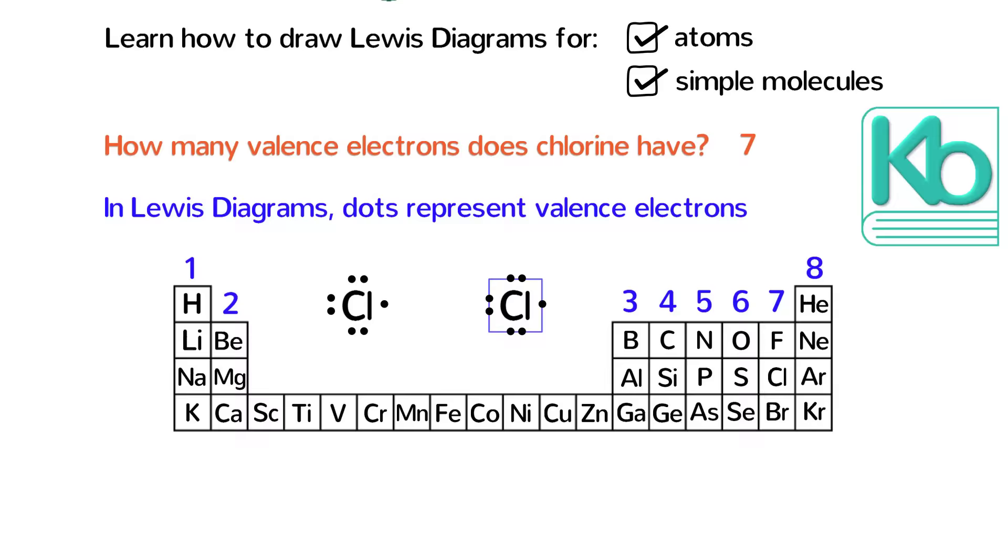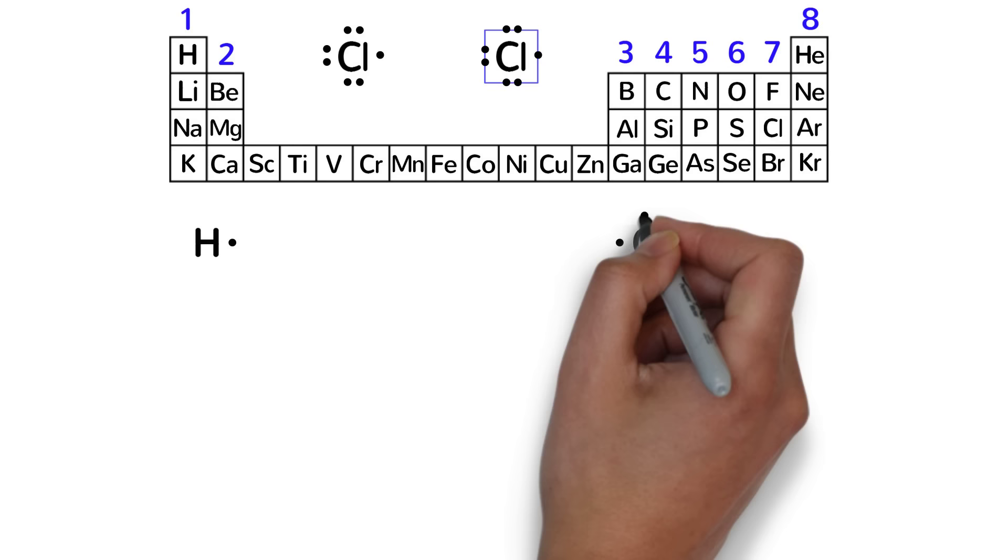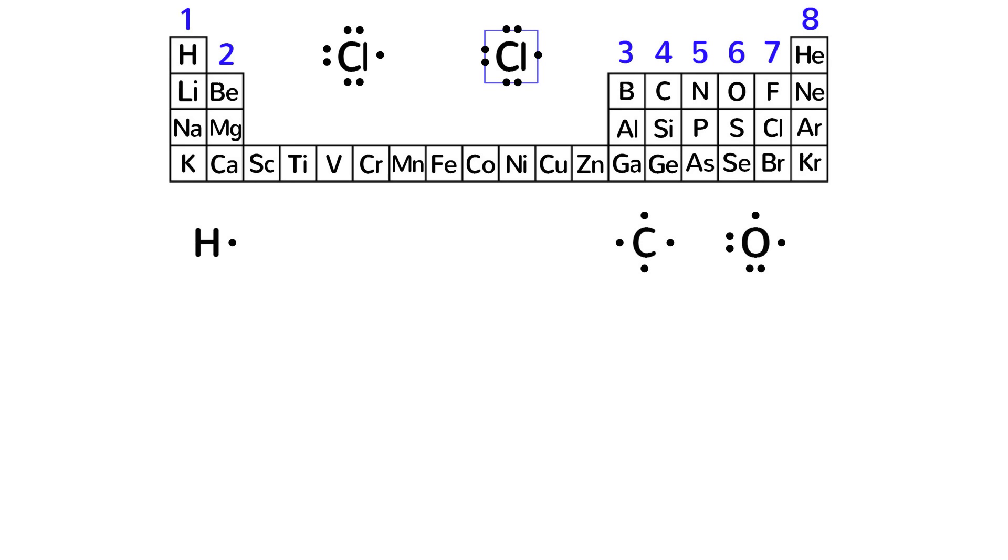Practice drawing Lewis diagrams of a few elements just to make sure you've got it. This is the Lewis diagram of hydrogen, which has only one valence electron. This is carbon, which has four valence electrons. And this is oxygen, which has six valence electrons. Where you put the dots doesn't really matter as long as you neatly draw them along the sides of an imaginary square and never put more than two dots on one side.